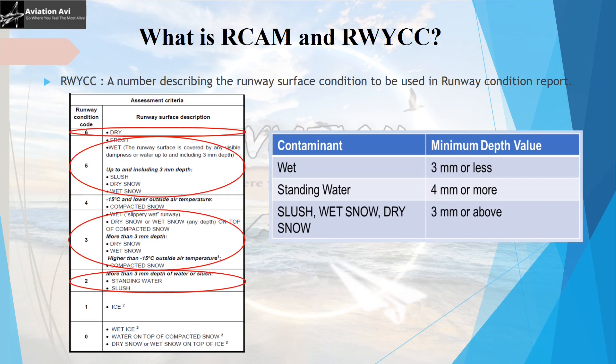In many countries like India, where the major contaminant is only water from rain and there is no snow, slush, or ice on the runway, the matrix of runway condition code can be reduced. The codes 6, 5, 3, and 2 can be used: 6 refers to a dry runway, 5 refers to a wet runway with contaminant depth 3 mm or less, 3 refers to a slippery and wet runway where the depth of water is more than 3 mm, and 2 refers to a runway having standing water of depth more than 3 mm.